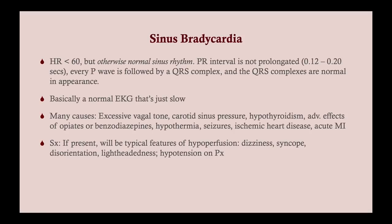So basically it's just a normal EKG that's a little bit slow. There are many causes of sinus bradycardia: excessive vagal tone, carotid sinus pressure, hypothyroidism, adverse effects of opiates or benzodiazepines, hypothermia, seizures, ischemic heart disease, and acute MI. Excessive vagal tone, carotid sinus pressure, and hypothermia are going to slow the heart down. Ischemic heart disease and acute MI are going to be really important when we get to the AV blocks.